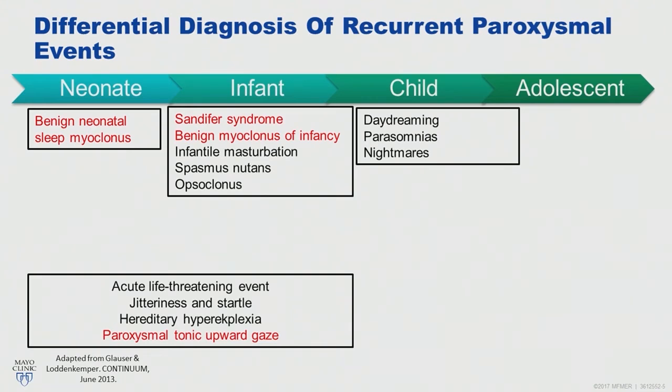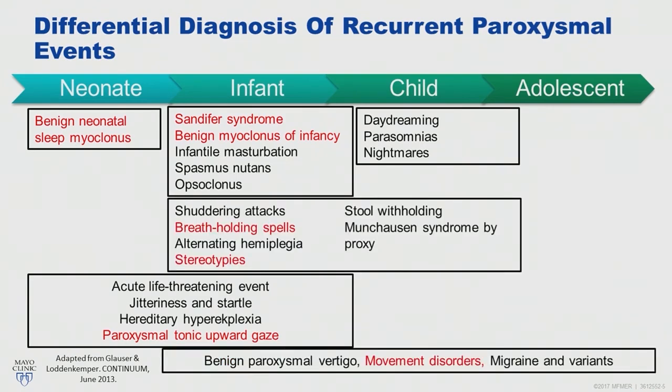In infants, you might consider Sandifer syndrome, benign myoclonus of infancy — which can happen during awakening or sleep, in contrast to benign neonatal sleep myoclonus — infantile masturbation or self-gratification behaviors, spasmus nutans, opsoclonus, shuddering attacks, breath-holding spells, and other motor behaviors such as stereotypy, stool withholding, and not to forget Munchausen syndrome by proxy.